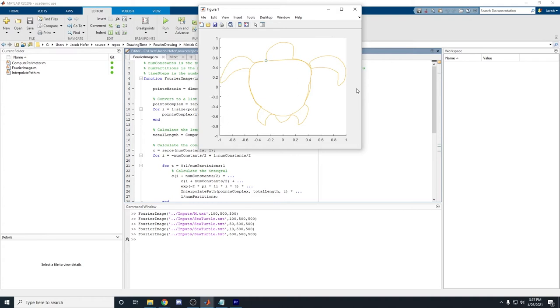And that's because as we increase more and more constants, it starts to converge to our original function, which our original function was a bunch of complex numbers just as a function of time.